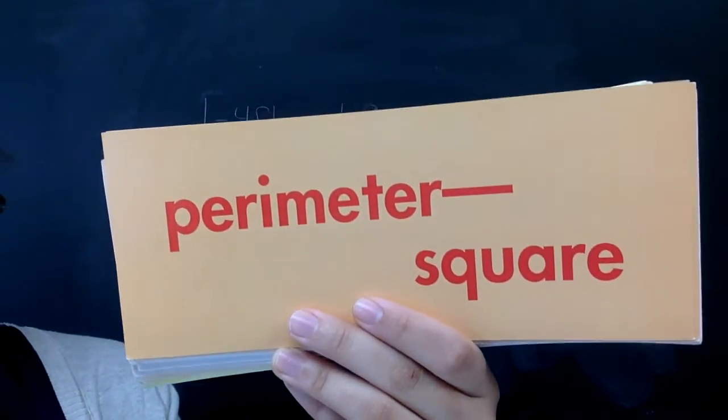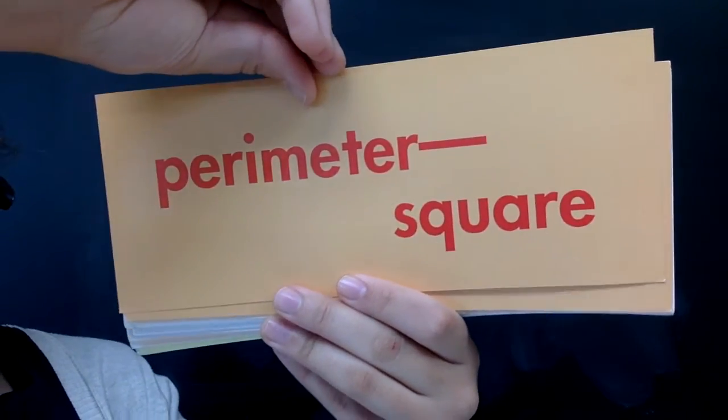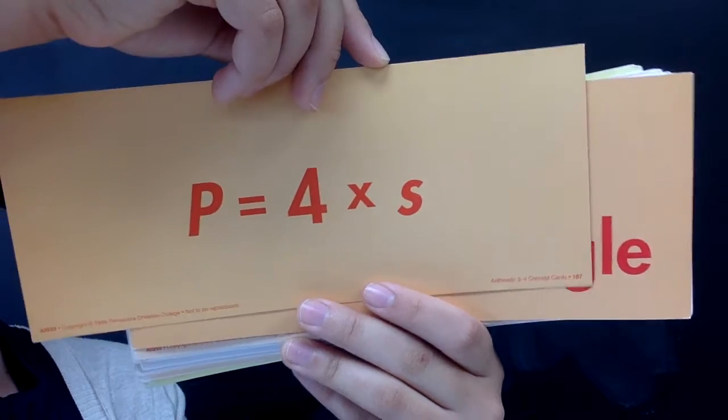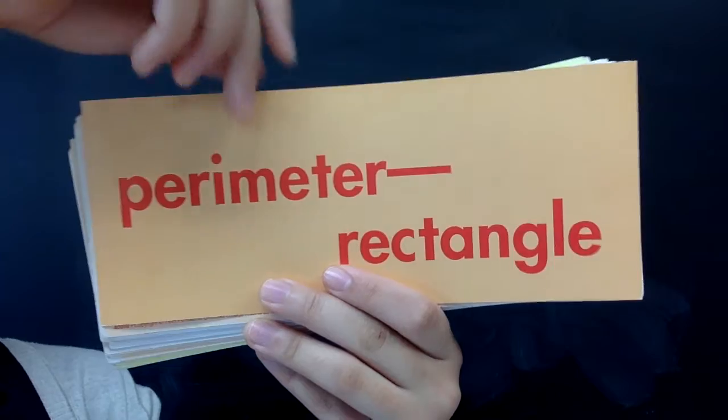Intersecting lines. What is the formula for the perimeter of a square? P equals 4 times s. What about the perimeter of a rectangle? P equals in parentheses 2 times L plus in parentheses 2 times W.